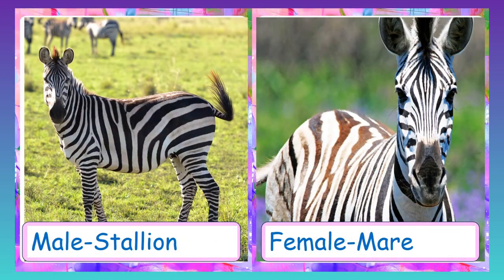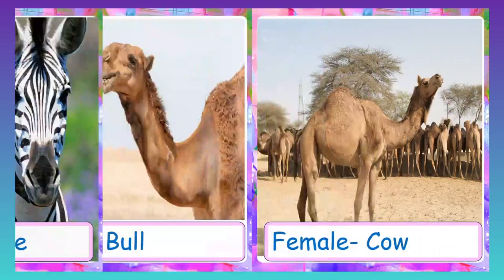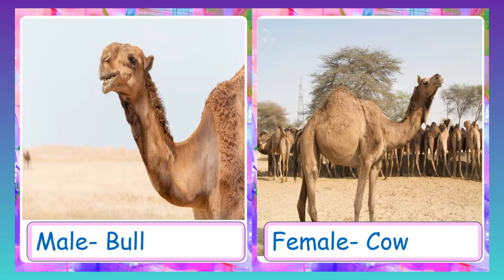Zebra: male zebra is called stallion and female zebra is called mare. Camel: male camel is called bull and female camel is called cow.